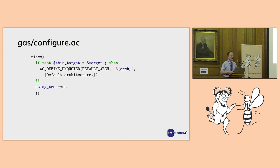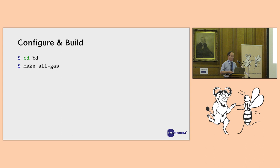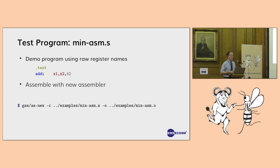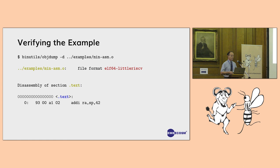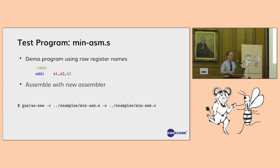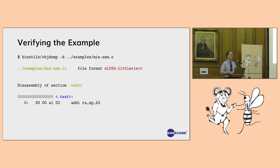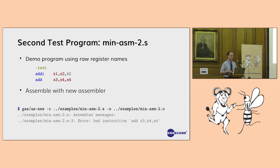Now we can use our own assembler. The simple test program with 'addi x1, x2, 42' gets assembled with the new assembler, then given to the disassembler. Note the test program uses raw register names, but when disassembling it uses the ABI names by preference because of the ordering in the description. It also handles errors - give it an assembler with an instruction it doesn't know about, and it barfs saying it doesn't know about that instruction. That's how you create a disassembler and assembler - the syntax side.